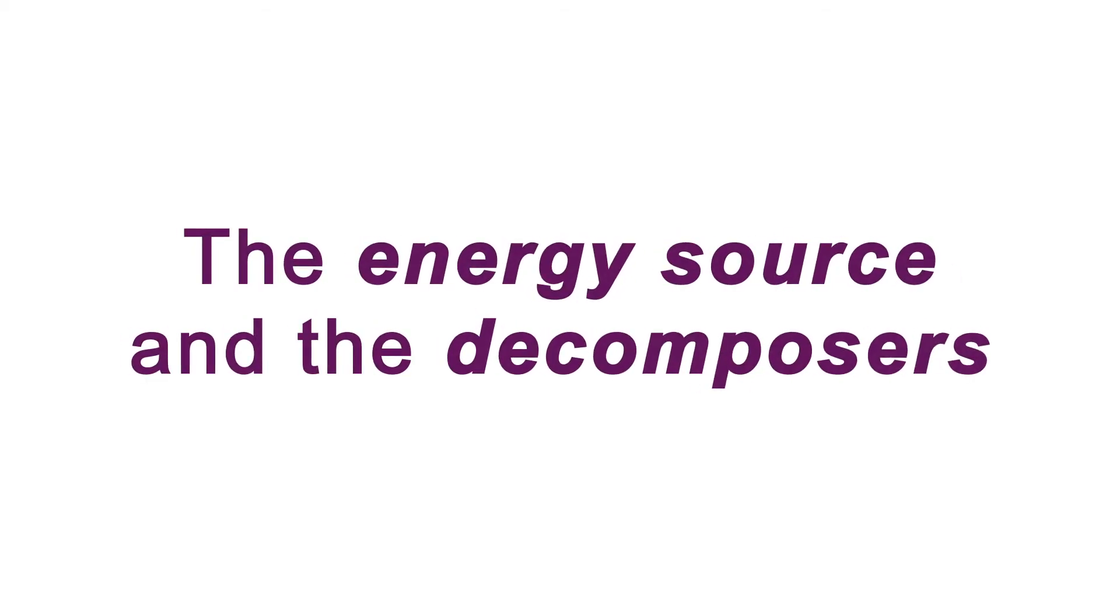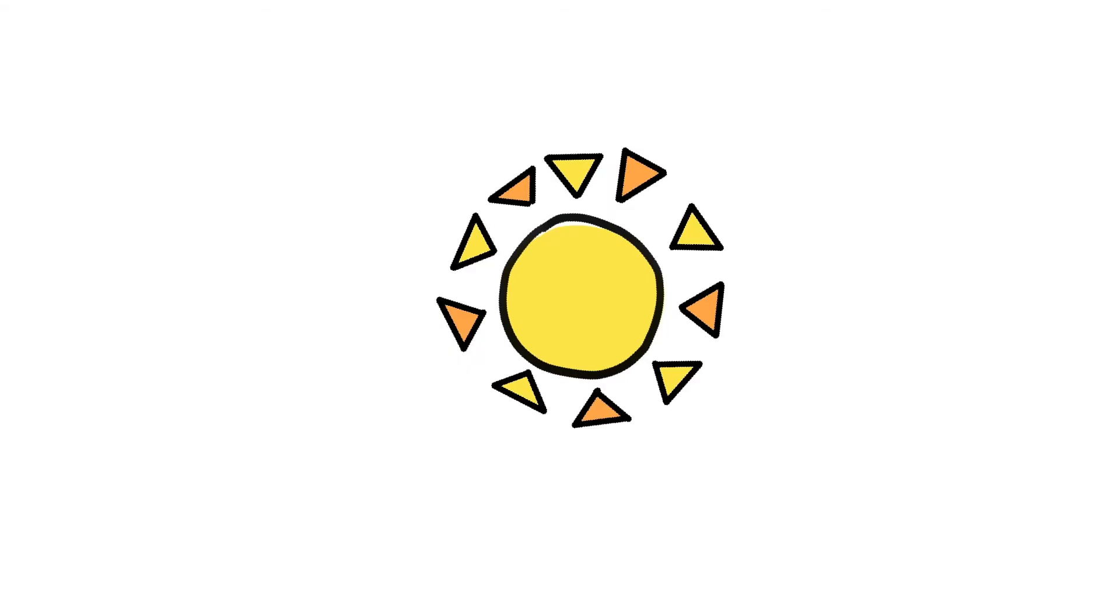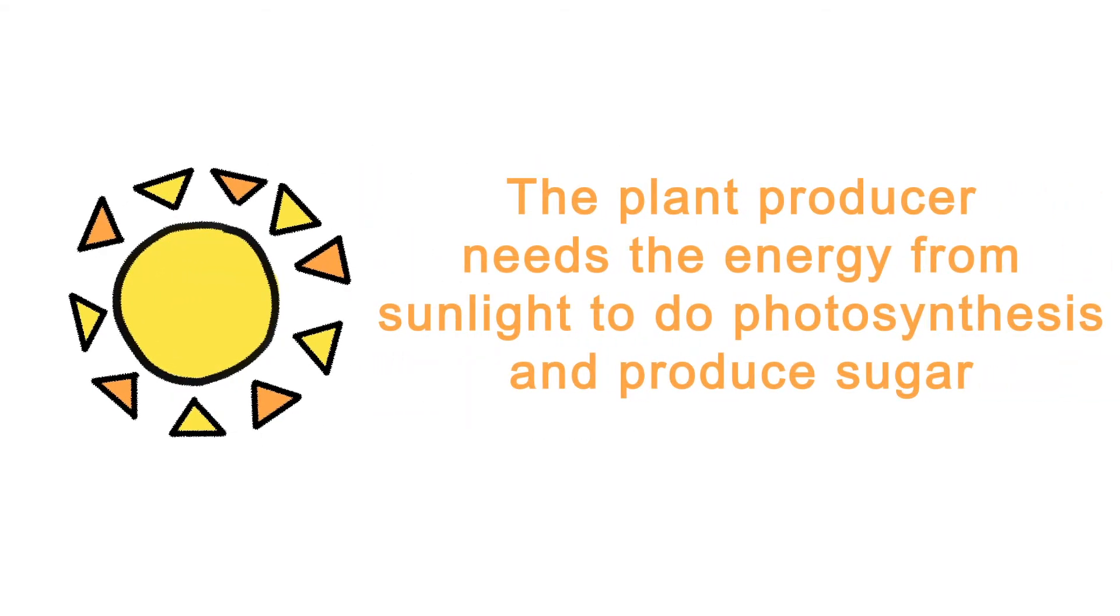Before we move on to the next concept, let's add two more important things to our food chain, the energy source and the decomposers. In this food chain, the energy source has to be the sun, because the plant producer needs the energy from sunlight to do photosynthesis and produce sugar. Because of this, let's add the sun right here.